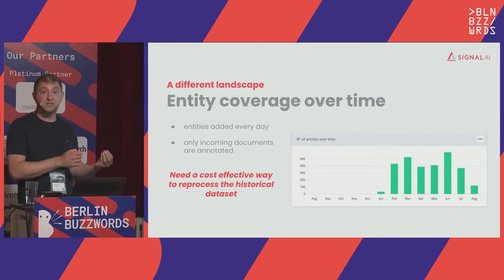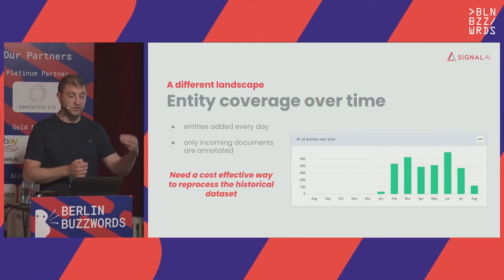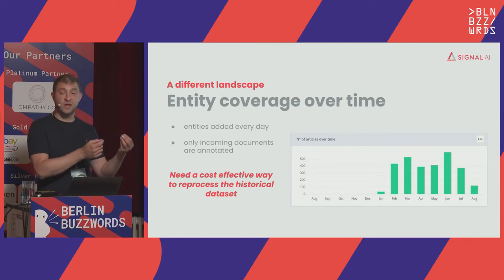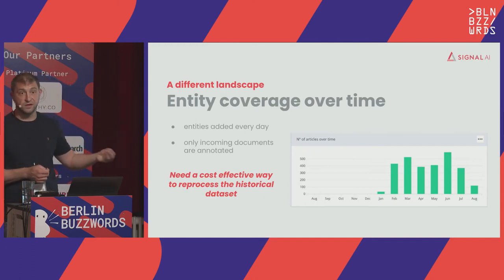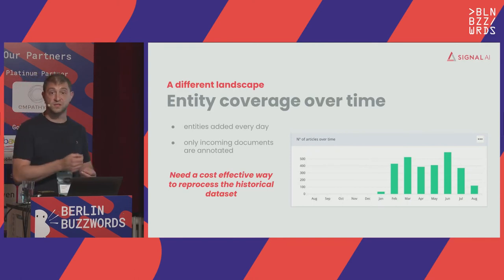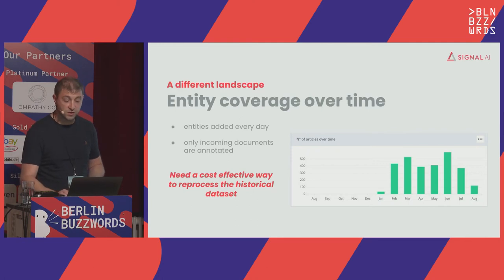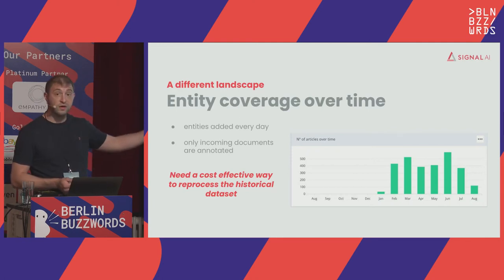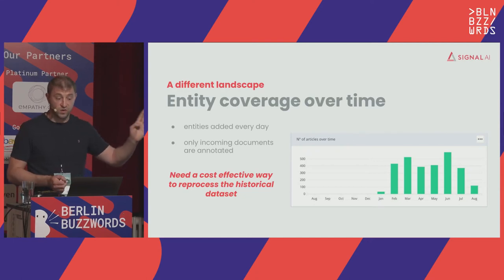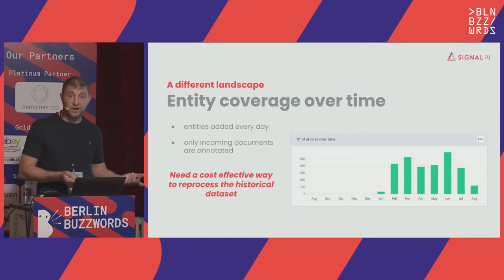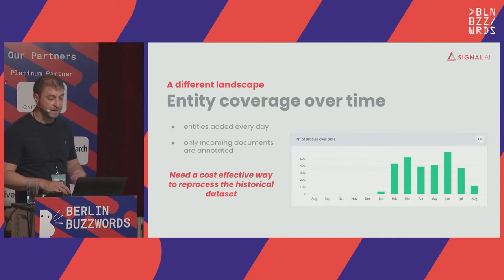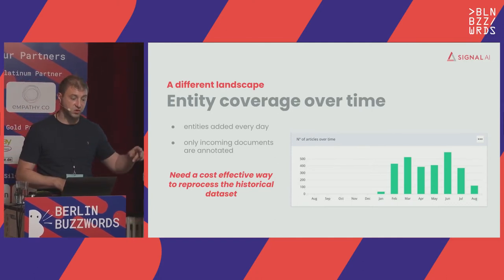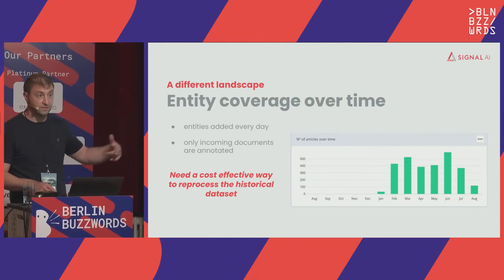Entities are very important to us — we create entities every single day. The problem is that whenever you create an entity, only new documents coming into the pipeline are annotated with these new entities. As a consequence, when you search for a specific entity, you only get results from the moment the new entity was deployed. When we have 15-plus months of data, we want users to be able to compute analysis over the widest period of time we offer. So we need a cost-effective way to reprocess our historical dataset to retro-tag our entities.